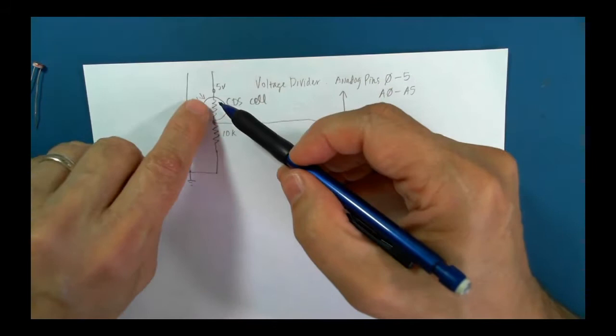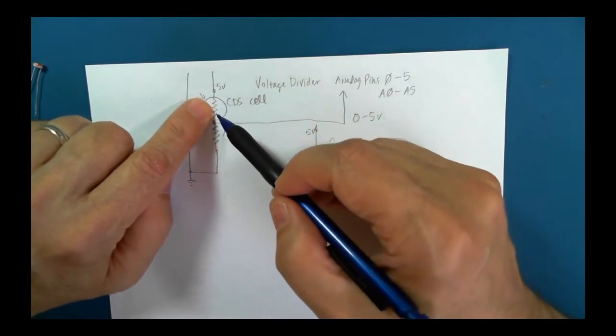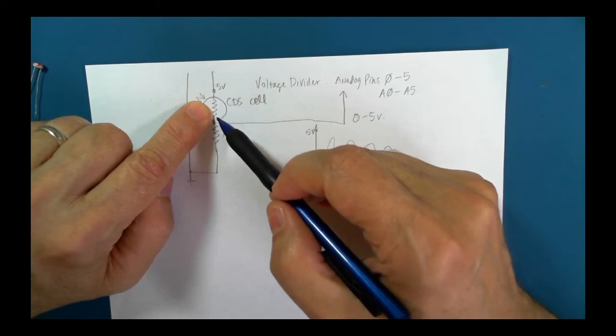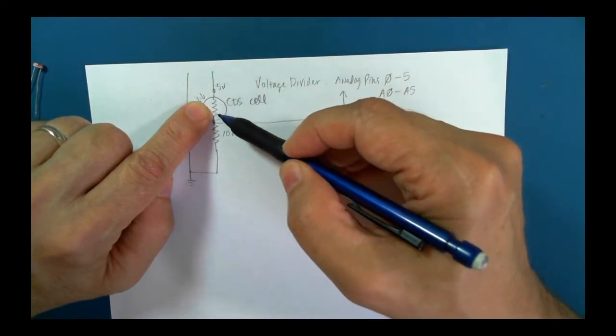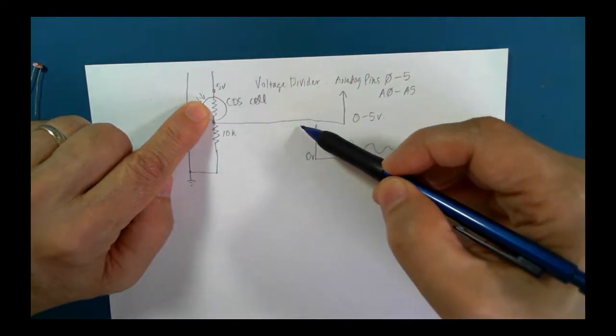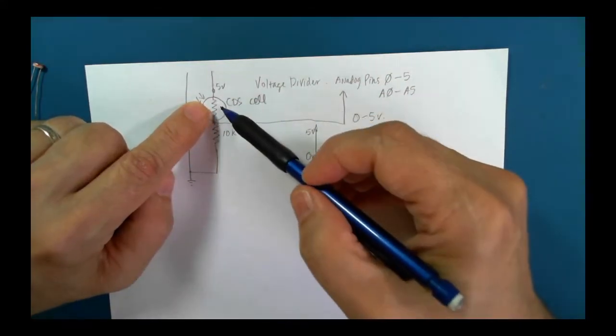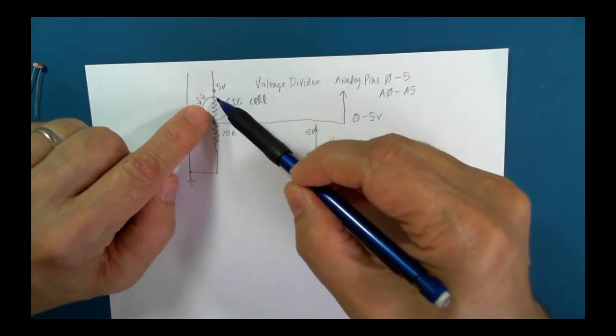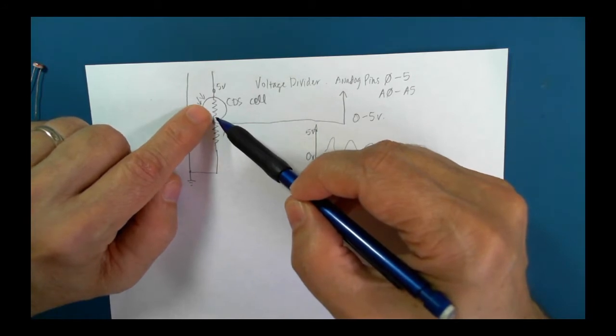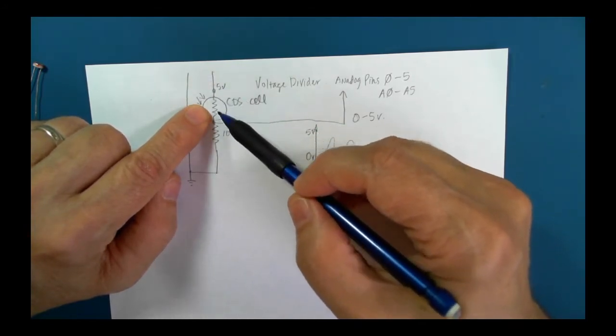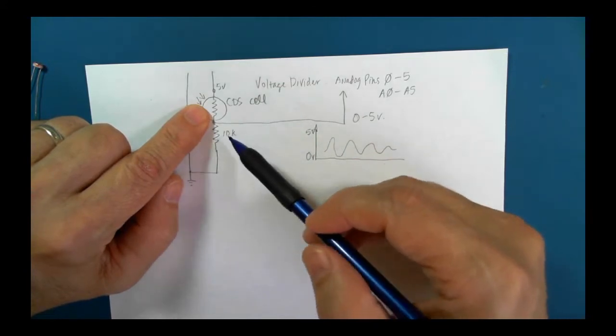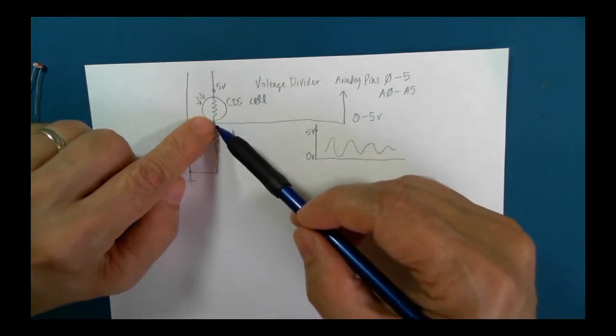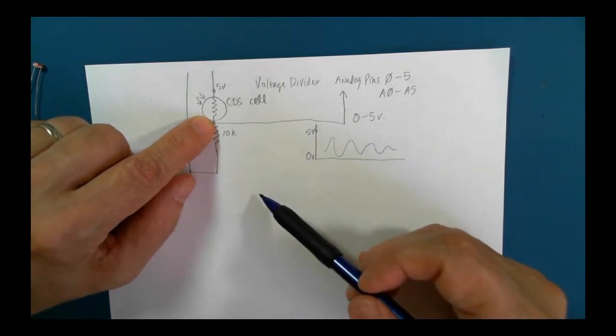So if the resistance is very, very low in the cadmium sulfide cell, then it will allow a higher voltage to travel through to the analog pins. Conversely, if this is a very high voltage, it will not let much of the high voltage through. And the 10K resistor will have more effect and bring the voltage that's coming out of here down towards ground.